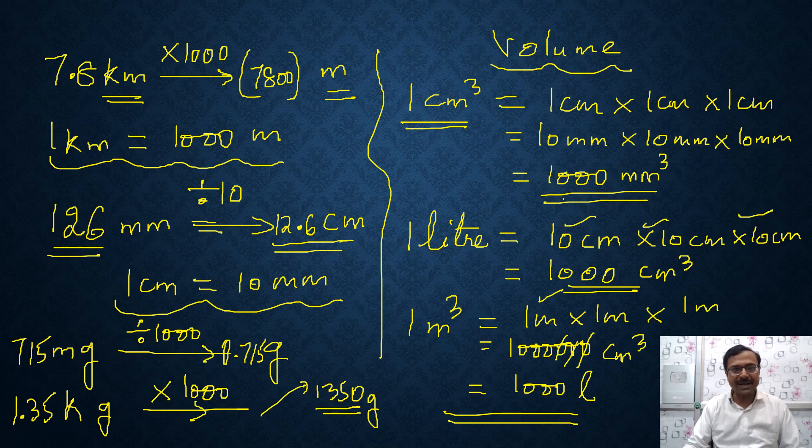Have you seen the overhead tanks on houses? The storage, water storage tanks? They have a capacity of 1000 liters. And 1000 liters is 1 meter cube. The same thing works here also. Larger unit to smaller, multiply. Smaller unit to larger, divide.